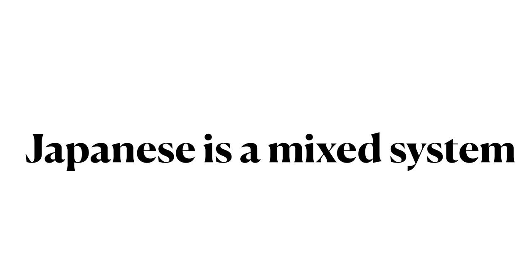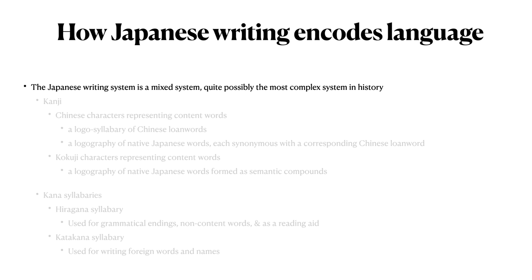Japanese is a mixed writing system. The Japanese writing system is not made up of a single component, such as we saw in Chinese with Chinese characters, nor as we see in English with a single alphabet. Rather, the Japanese writing system is a mixed system combining kanji and two kana syllabaries. It has been argued that the Japanese writing system is one of the most complex writing systems ever developed in the history of writing — indeed, it is quite possible that it is the single most complex writing system in history.